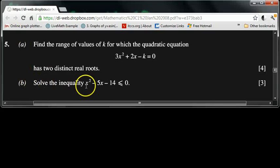Part b of question 5: solve the inequality x² - 5x - 14 ≤ 0.